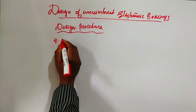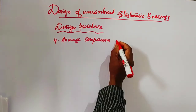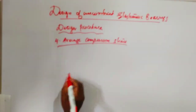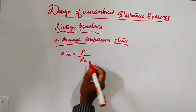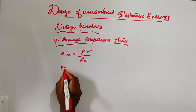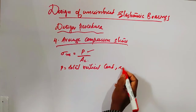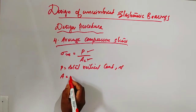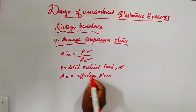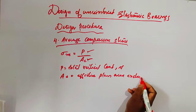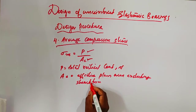Step 4 is average compressive stress calculation. The average compressive stress is denoted by σm, and σm equals P divided by Ae. Where P is the total vertical load in Newtons, and Ae is the effective plan area — that is, the plan area excluding the shear deformation.